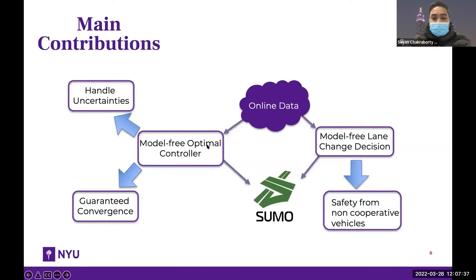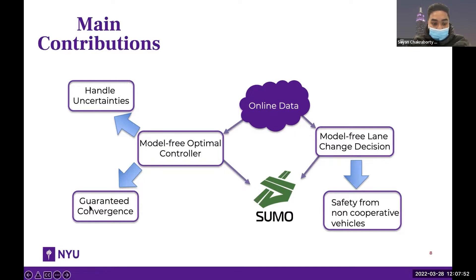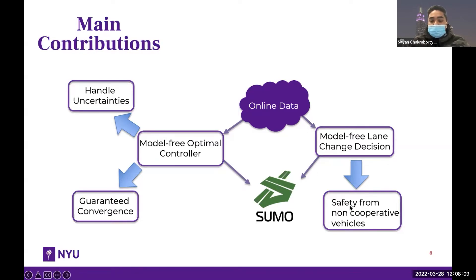Here are the main contributions of the work. We receive data online collected by sensors, and with that data we do model-free optimal control. This optimal controller guarantees convergence and can handle uncertainties. With the data received from the sensors, we also do model-free lane change decision making, and we are responsible to maintain safe distance from the surrounding vehicles and ensure safety from non-cooperative surrounding vehicles.